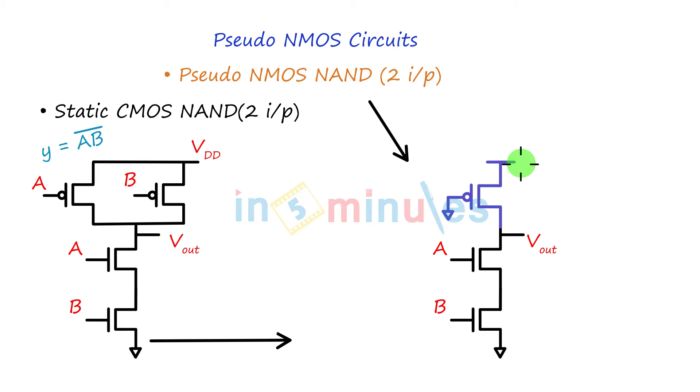But currently, the advantage is for a static CMOS NAND, if it was a two input, we needed totally four transistors. Whereas in pseudo NMOS, it will need three transistors.